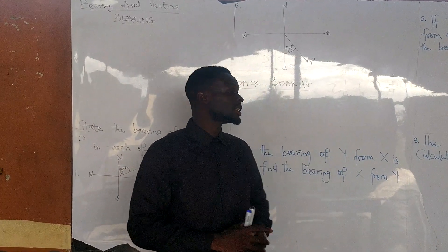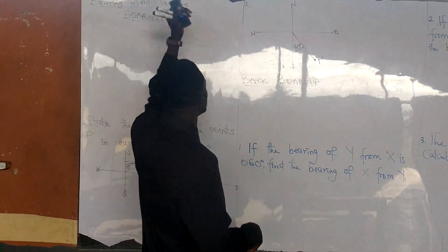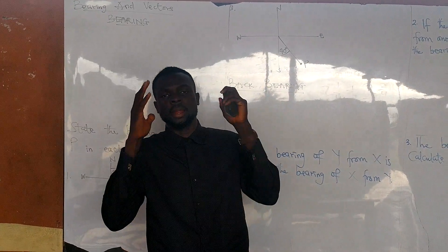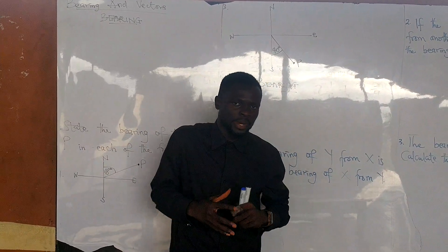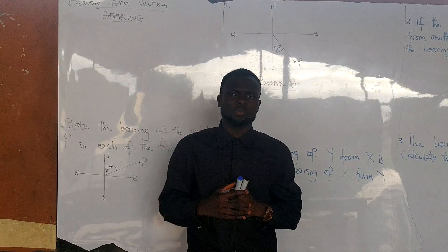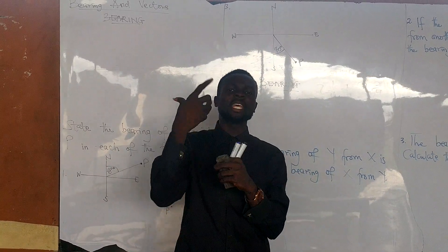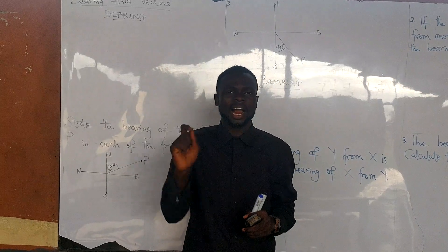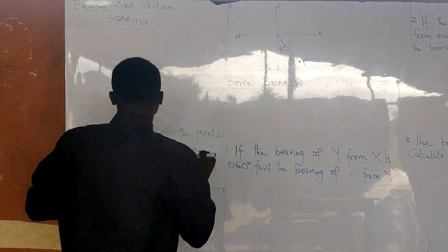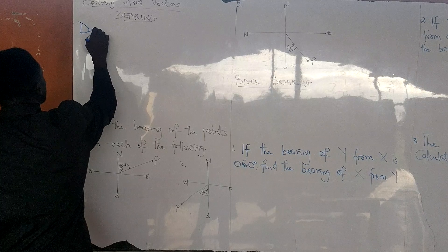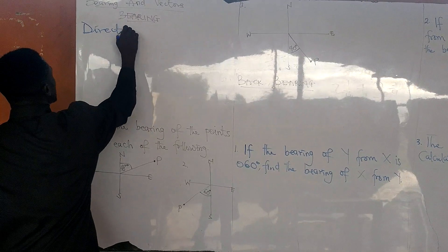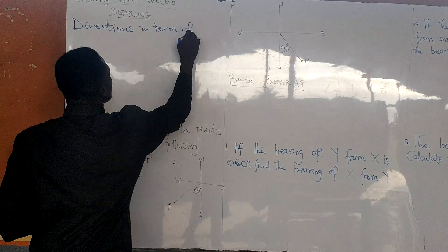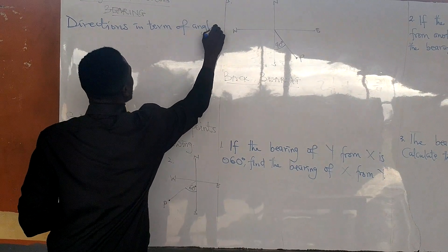Today we want to look at bearing and vectors. But the discussion today is only on bearing. Bearing gives directions in terms of angles. So when we say bearing, it gives words directions in terms of angles.